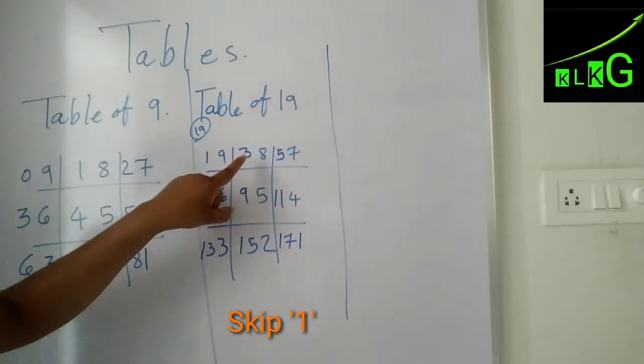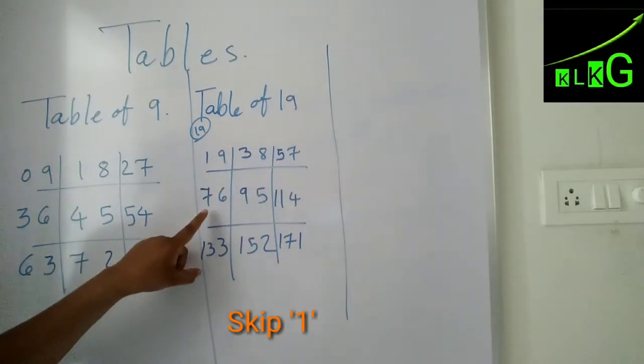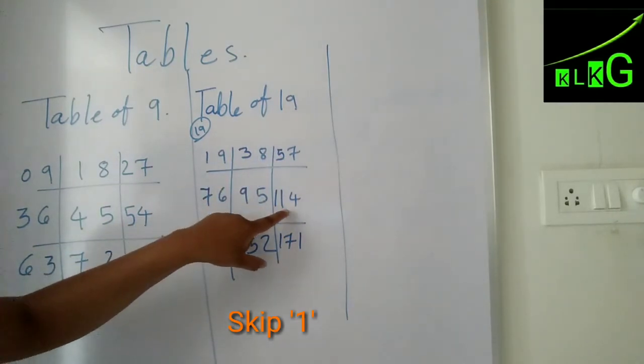19 ones are 19, 19 twos are 38, 19 threes are 57, 19 fours are 76, 19 fives are 95, 19 sixes are...